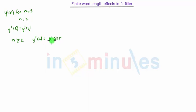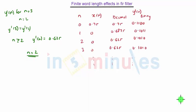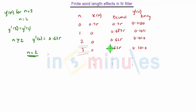Therefore the system enters the limit cycle when n is equal to 2. The limit cycle of the system can be represented from the table: for n equal to 2 and n equal to 3, the output comes out to be 0.625, and 0.625 will remain constant for all n greater than or equal to 2.